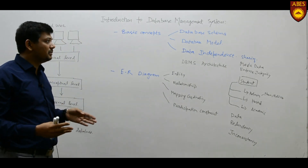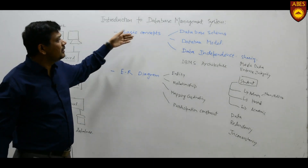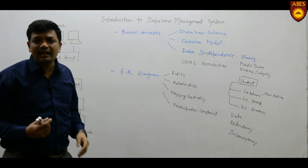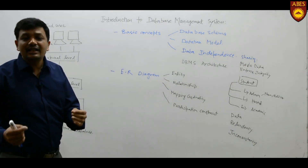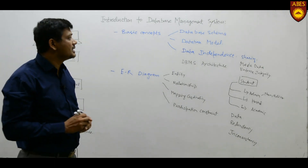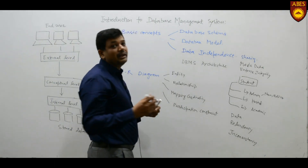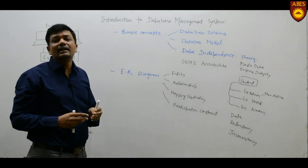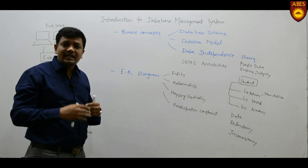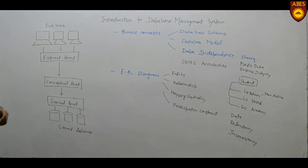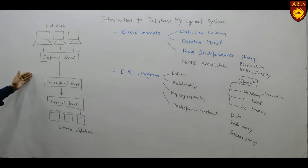Now coming back to the basic concepts of DBMS: the first concept is the database schema. The description of the database is known as the database schema. We describe it by specifying what are the various attributes and various data types. This description of the database can be at various levels, which we can understand with the help of the DBMS architecture.